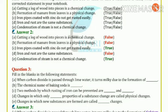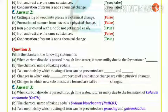Formation of manure from leaves is a physical change - false. This is a chemical change. Iron pipes coated with zinc do not get rusted easily - true. That is galvanization.